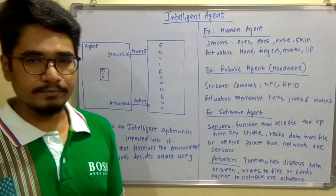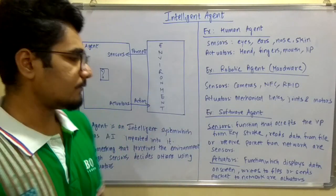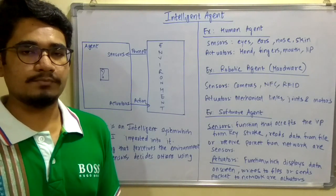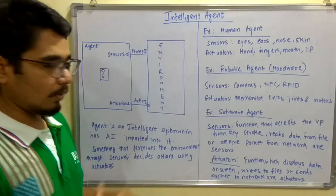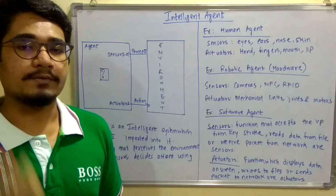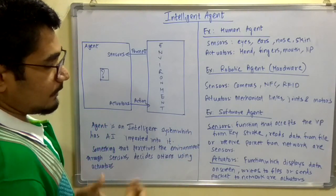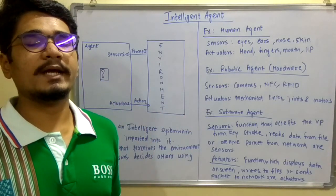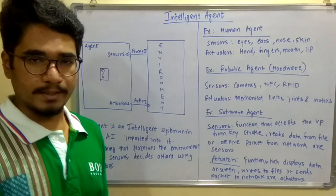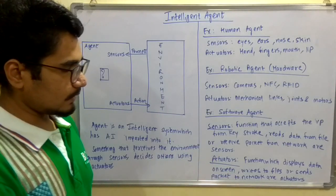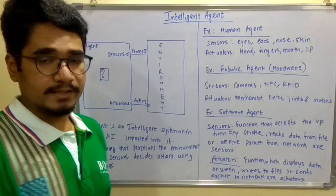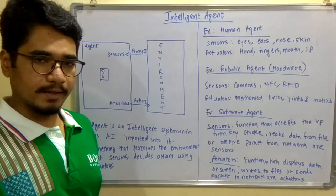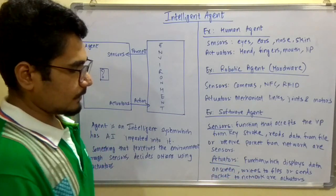For software agents, you write some functions using programming languages. That function accepts input — for example, a command from the keyboard acts as a sensor, as does reading data from a file or receiving an incoming network packet. All those are considered sensors. For actuators in a software agent, when final processing is done, it displays output on a monitor or screen or peripheral device. It also writes files and sends packets to a network, which correspond to actuators.